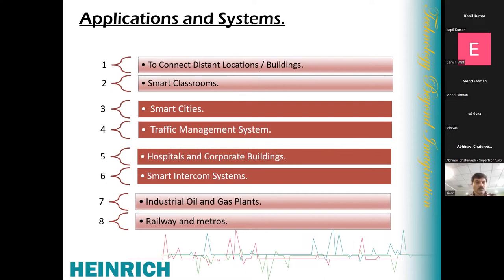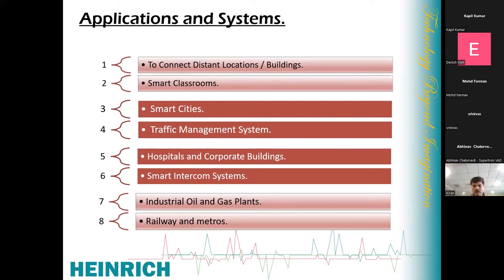Another application is campuses such as universities, which have large areas with multiple buildings — hostels, admin blocks, canteen blocks, and more. It is very difficult to connect all these buildings over a digital or analog PA system. With IP-based PA, you simply place a controller in each building over the network, and from one or multiple locations you can make announcements across all buildings.